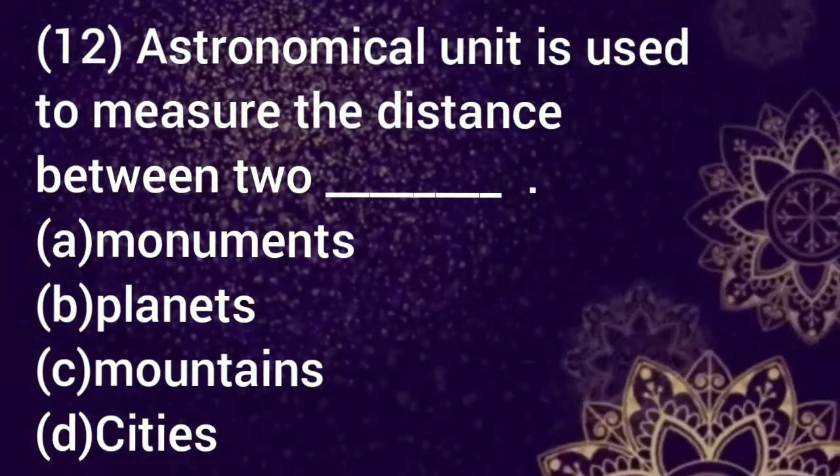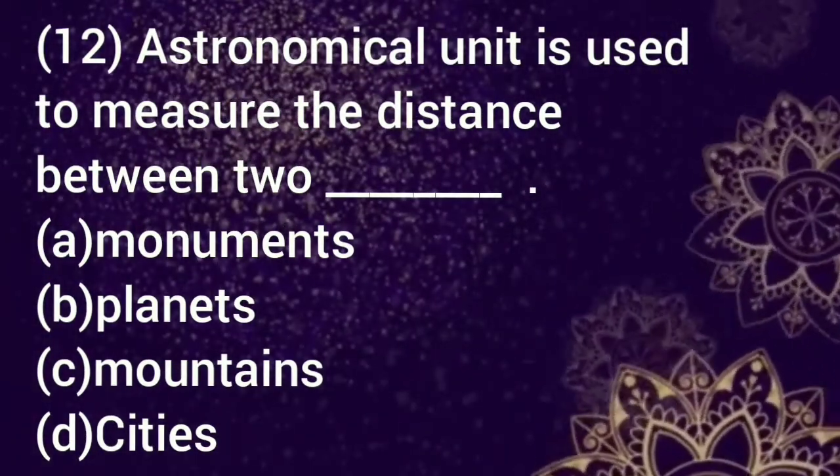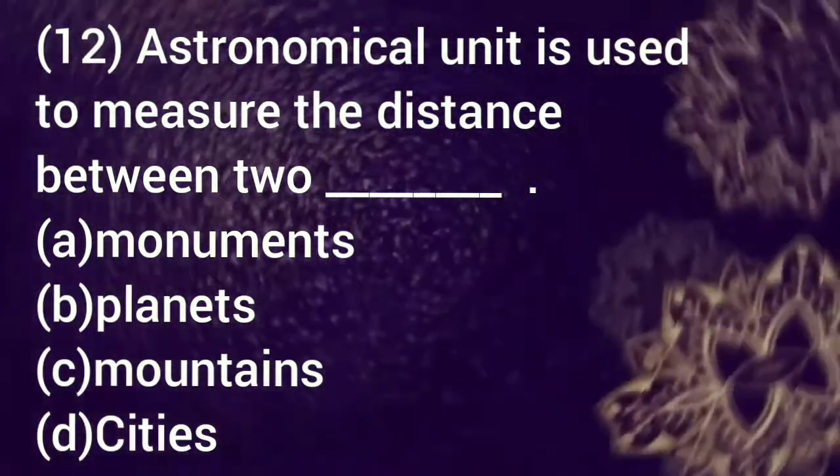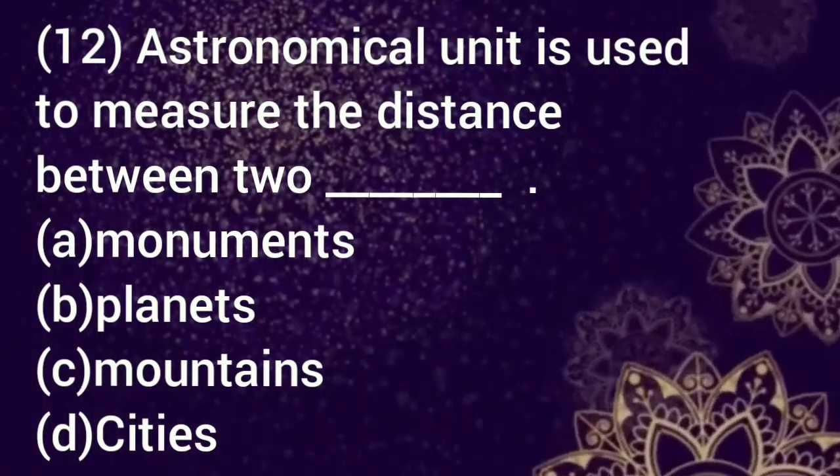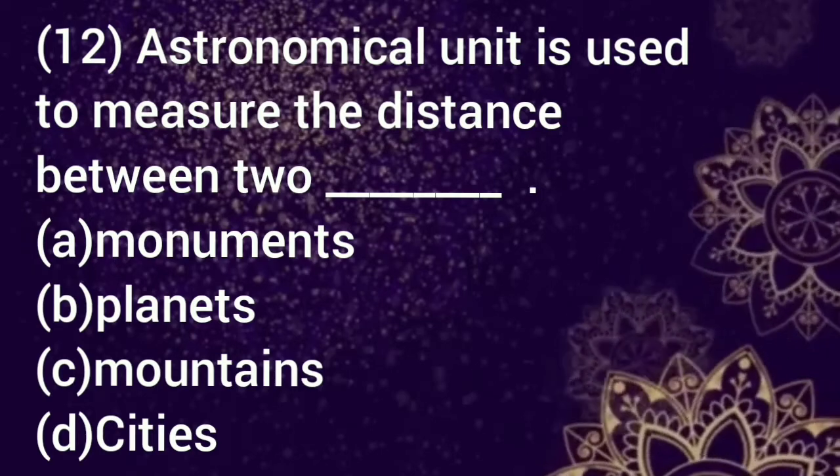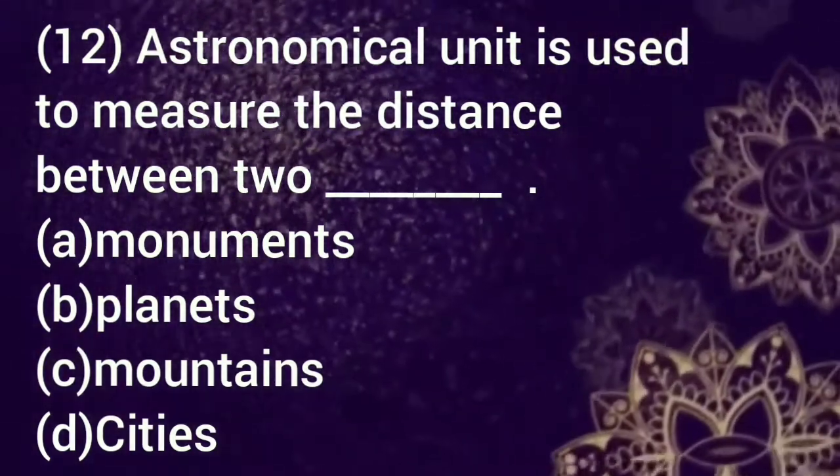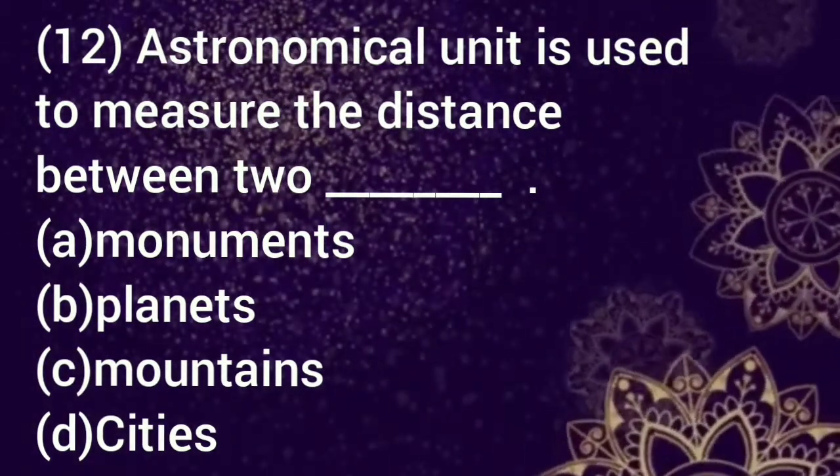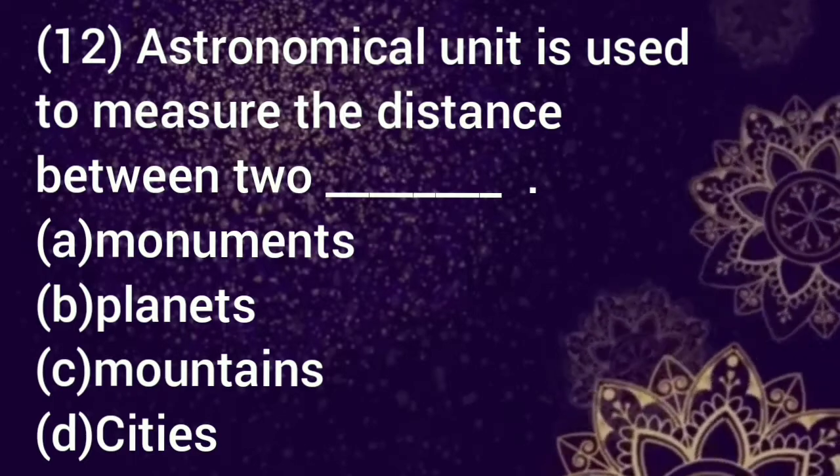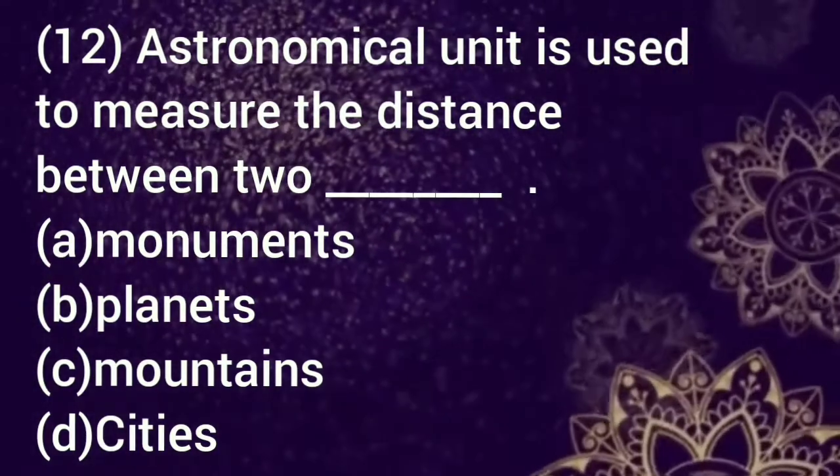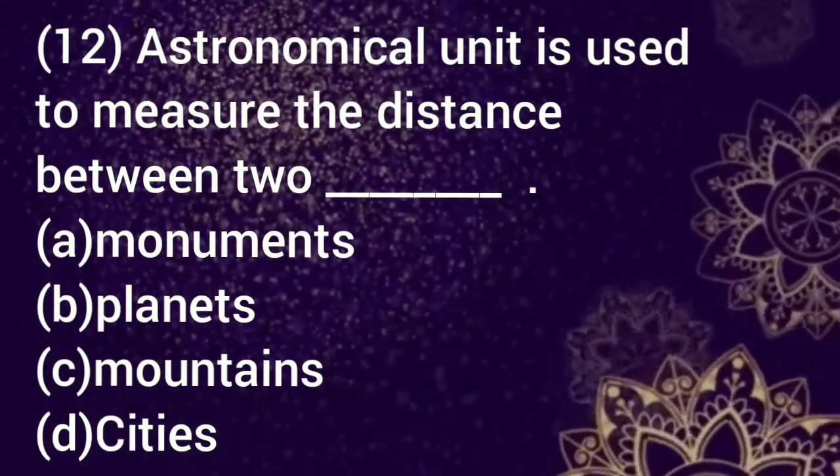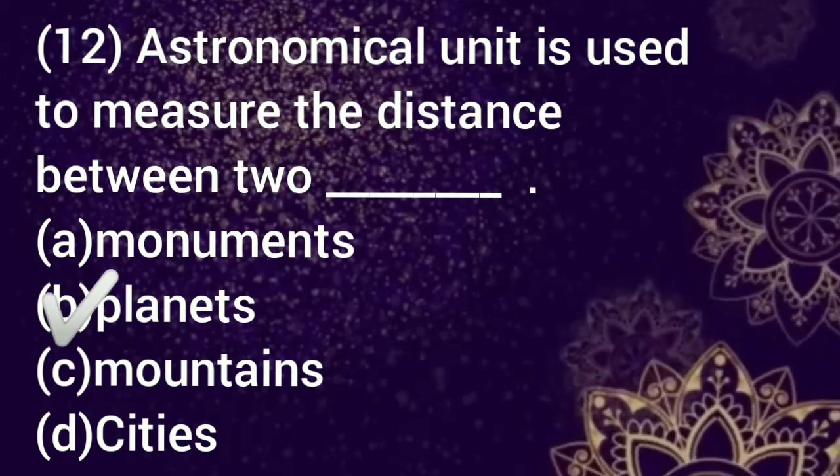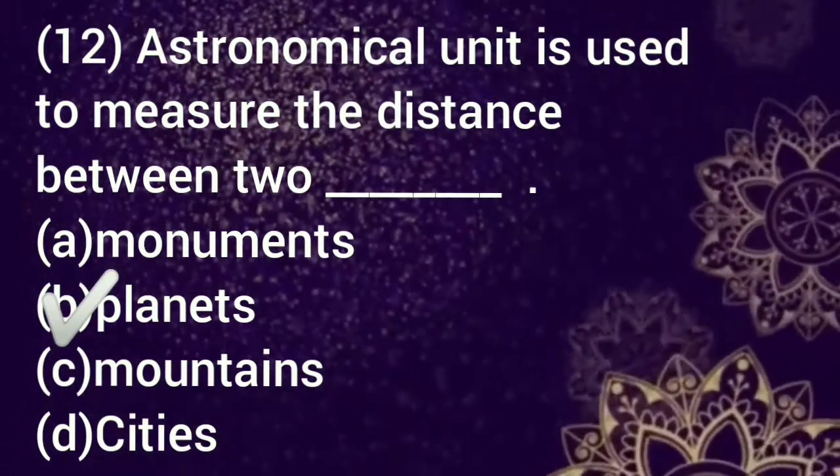Let's attempt question number 12. Astronomical unit is used to measure the distance between two dash. Option a: monuments, b: planets, c: mountains, d: city. Select your answer. The correct option is b, planets.